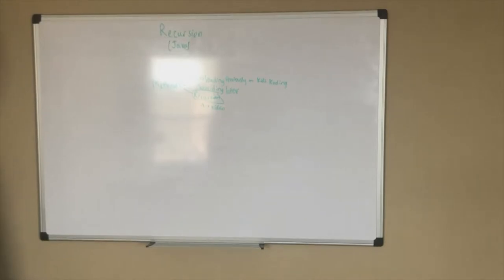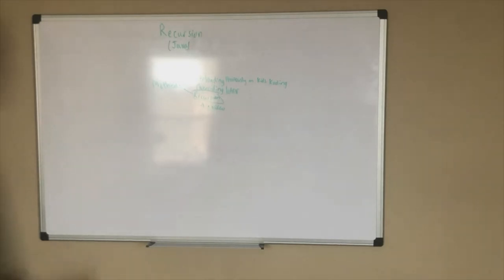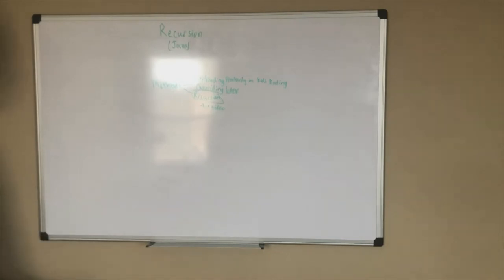I'm going to push off method overriding because I haven't covered inheritance yet, which is a fundamental core concept of OOP, similar to polymorphism. You need to know a bit of object-oriented programming and inheritance to do method overriding well. I'll probably push it off until we start with object-oriented programming and inheritance.